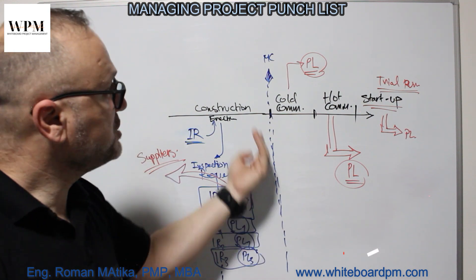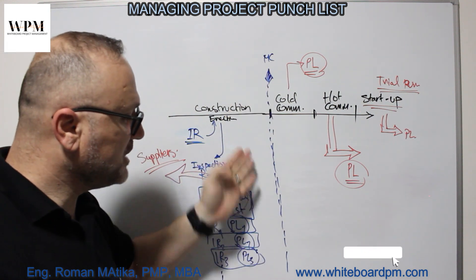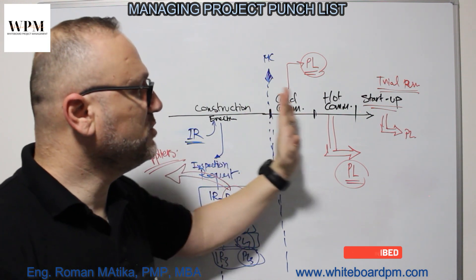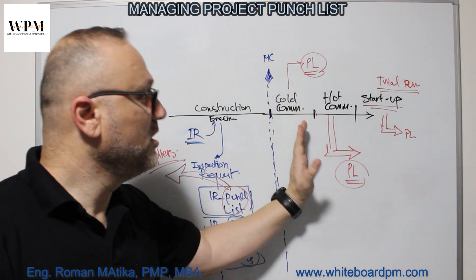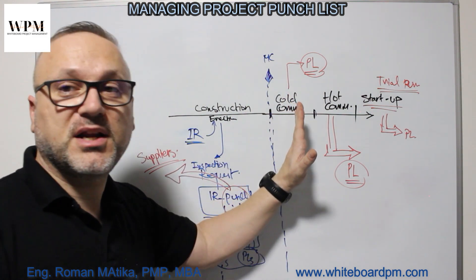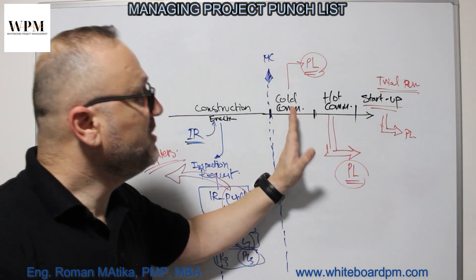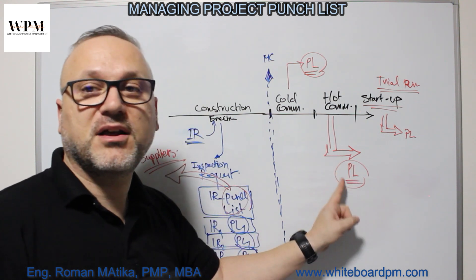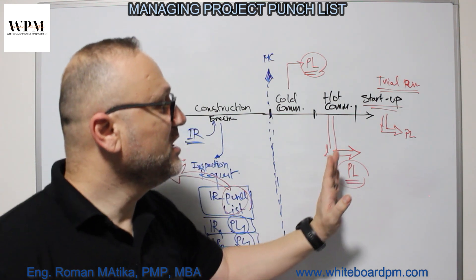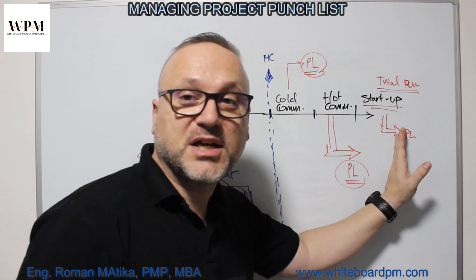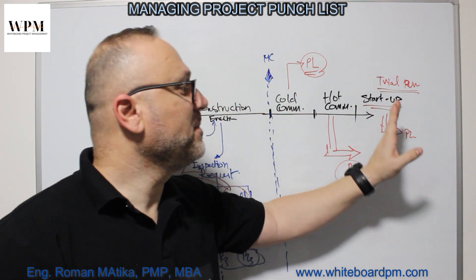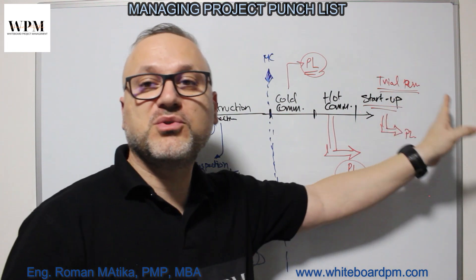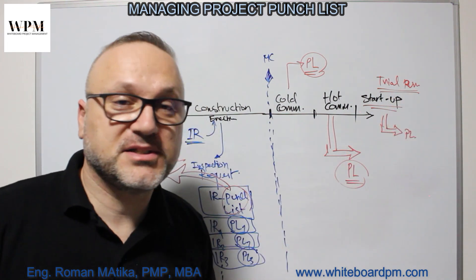At the mechanical completion stage, some punch lists are mandatory to be finished before going to the next stage. From cold commissioning, there are mandatory punch lists before going to hot commissioning. From hot commissioning, there are mandatory punch lists to be done before going to startup. And for startup, there are mandatory punch lists to be completed before achieving a reliable startup.